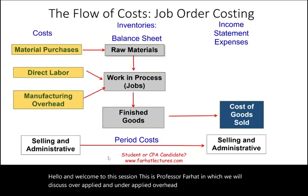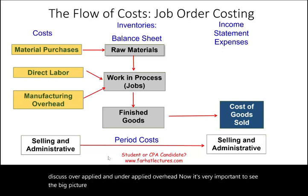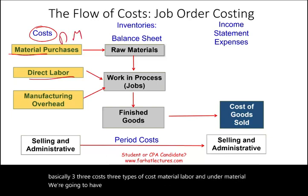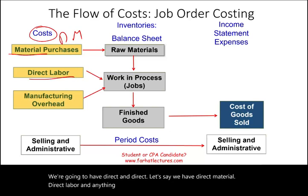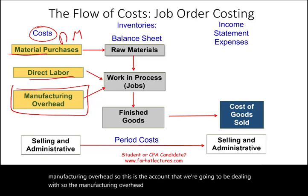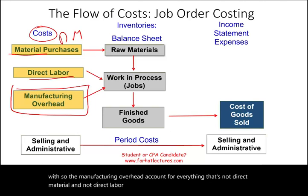Now it's very important to see the big picture. We have basically three types of costs: material, labor, and manufacturing overhead. Under material we have direct and indirect. Direct material and direct labor are tracked separately, and anything that's not direct material and not direct labor is manufacturing overhead. That is the account we are going to be dealing with in a manufacturing environment.